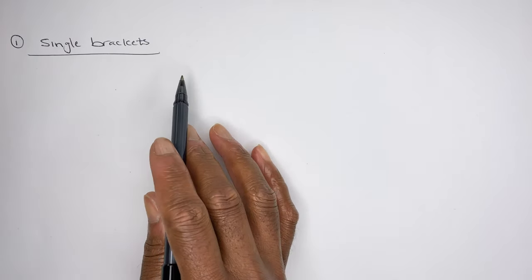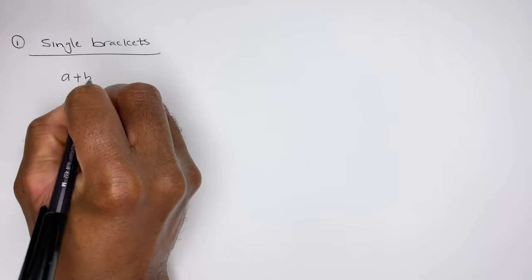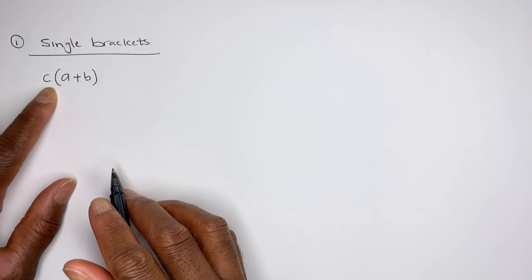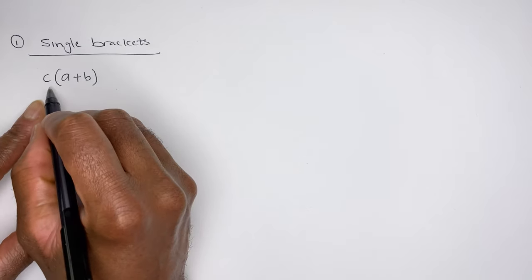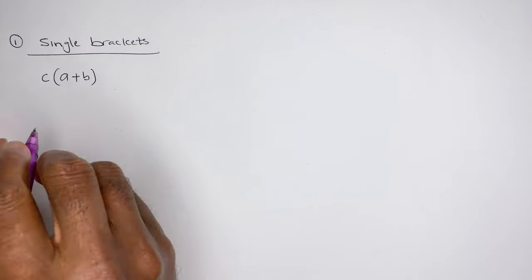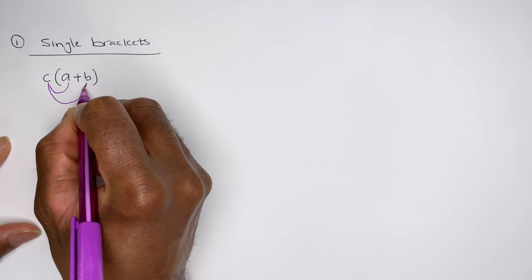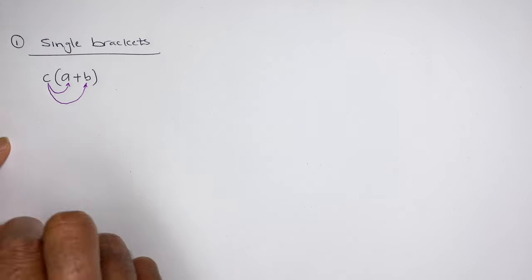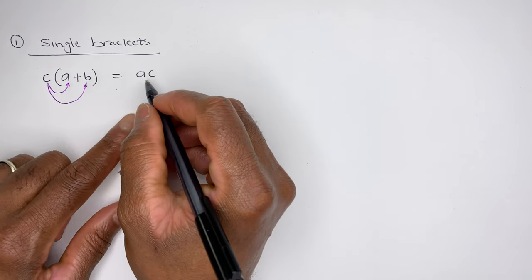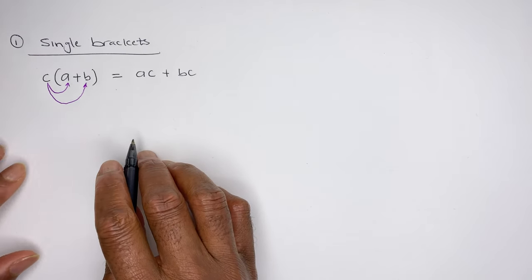Let's look at single brackets. A single bracket such as (a + b) multiplied by c — c is multiplied to one bracket. We can expand this bracket by multiplying it out: c times a plus c times b. So we get ac plus bc. That bracket has been expanded.